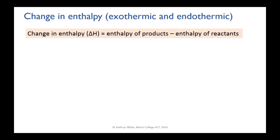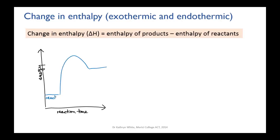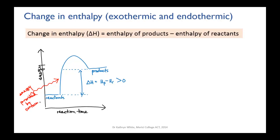Remember exothermic and endothermic reactions? We looked at them a few videos ago. The amount of energy released or absorbed during a chemical reaction is called the change in enthalpy. The change in enthalpy is the difference in energy between the reactants and the products, so it can be positive or negative. If it's positive, it means the products contain more energy than the reactants, and energy must have been absorbed from the surroundings — causing them to cool down. We call this an endothermic reaction.